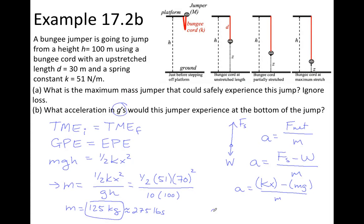And we can plug in numbers. K was 51. X was 70. Mass was 125. G is 10. We can divide this whole thing by M. And this is going to work out to be about 28 meters per second squared. And that converts to be about 2.8 Gs. So about 2.8 times as heavy as the person normally.